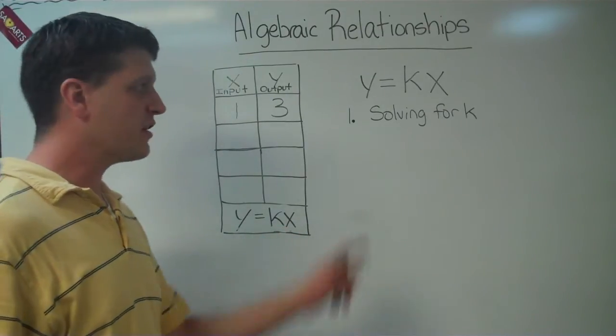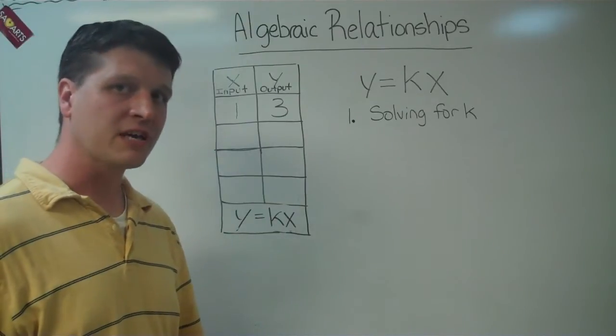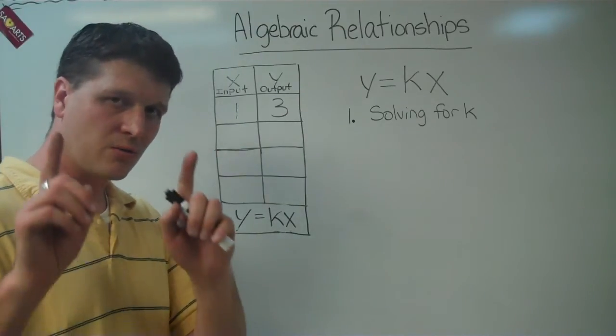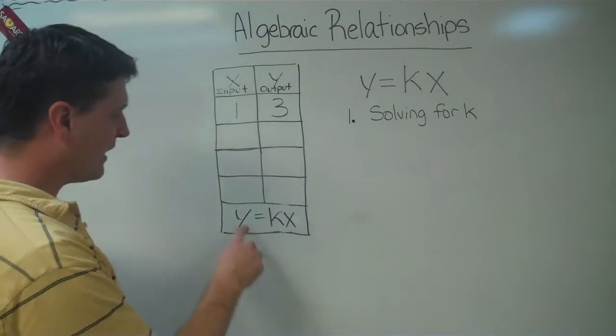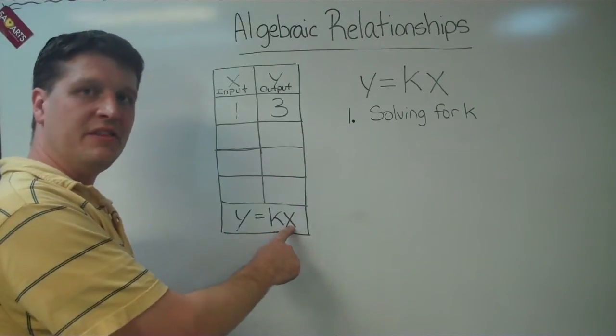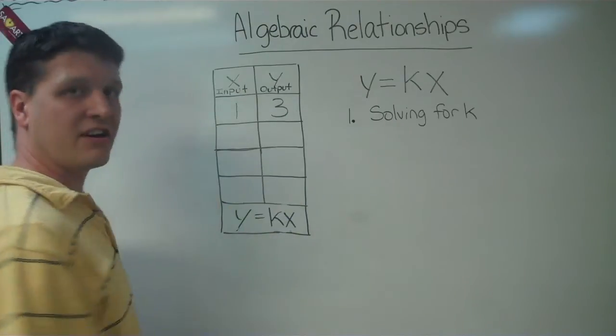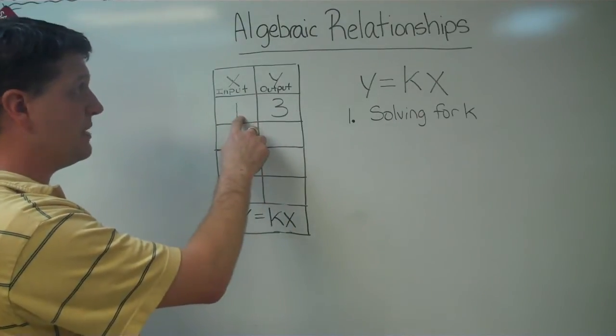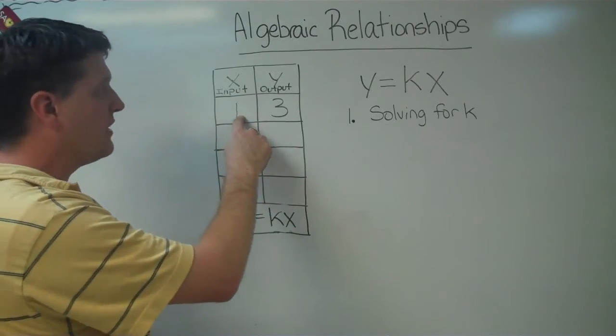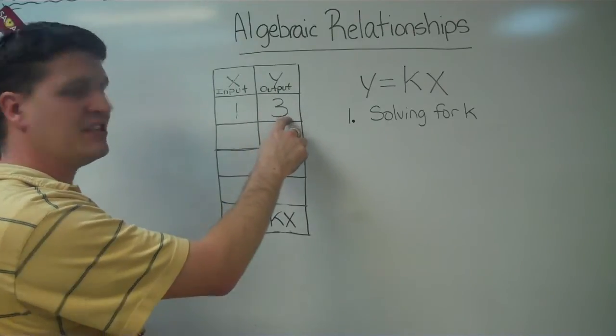I'm going to explain the component parts of y equals k times x right now. y and x, these are the given values inside our table. Our given x, which is the input, which is 1, and our y, which is our output, and it's 3.